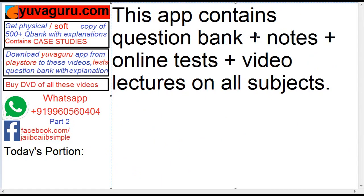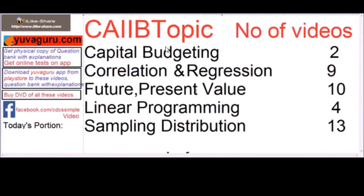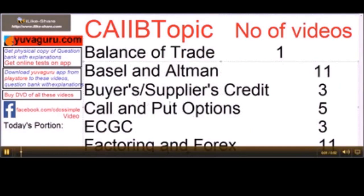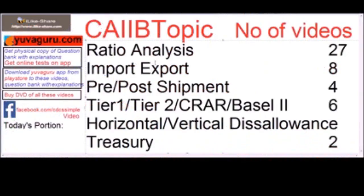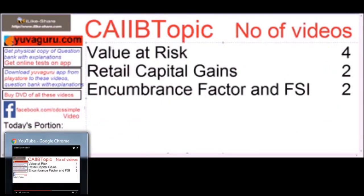The app contains question banks, notes, online tests, video lectures, and news. Topics covered include: Capital Budgeting, Correlation, Future and Present Values, Linear Programming, Sampling Distribution, Balance of Trade, Buyer's Credit, Supplier's Credit, Call and Put Options, ECGC, Factoring, LC Transactions, Balance Sheets, P&L, Bond Calculations, GDP, GNP, Deflator, IS-LM Curves, Union Budget, Keynes' Theory, Ratio Analysis, Import-Export, Pre- and Post-Shipment, Tier 1 and Tier 2 Capital, CRAR, Basel, Horizontal and Vertical Disallowances, Value at Risk, Retail Capital Gains, and Encumbrance.